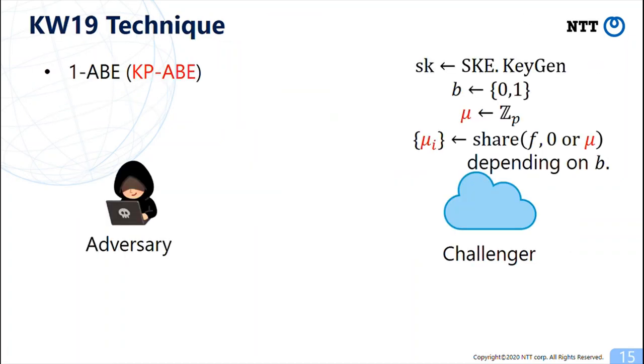The KW technique is a method for proving the adaptive security of 1-ABE. More concretely, Kowalczyk and Wee prove that the challenger's bit in the following game is indistinguishable. First, the challenger generates a secret key of secret key encryption scheme and a secret value.